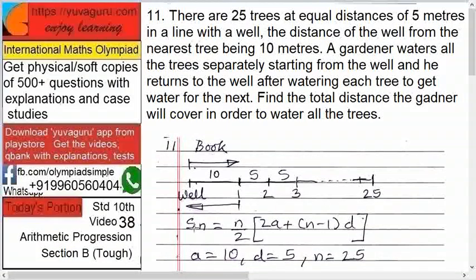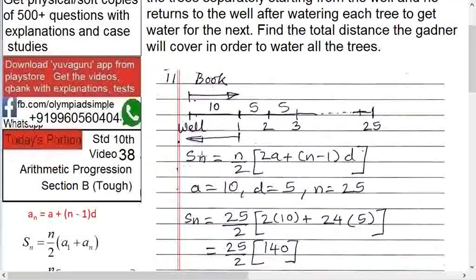Now we will move ahead. So what we want: SN. SN means sum of all these APs. This is basically AP because 1, 2, 3. So the sum is what? N upon 2 into 2A plus N minus 1 into D.